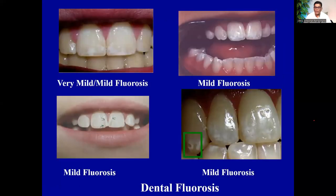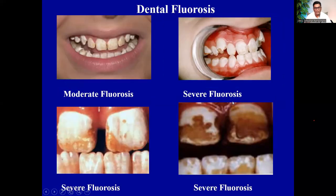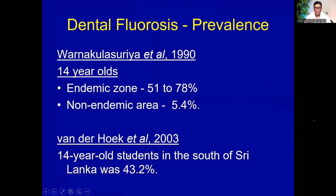To the naked eye, mild fluorosis looks like white spots dispersed everywhere on teeth. The severe form is highly characteristic — brownish teeth, highly disfiguring. If you see any patient like this, you can refer them. The prevalence is high in fluoride endemic areas, going up to 78% according to research.